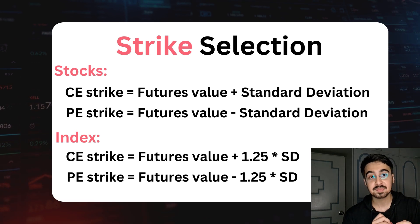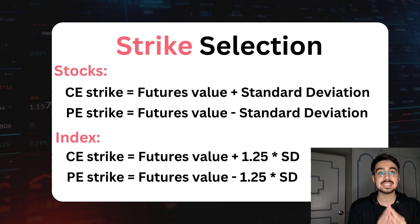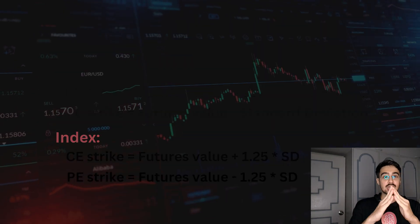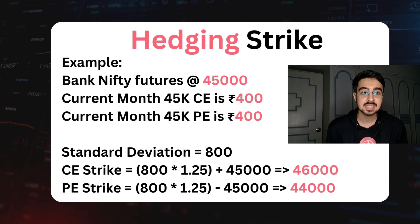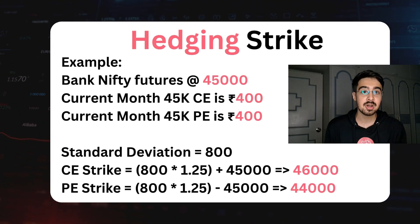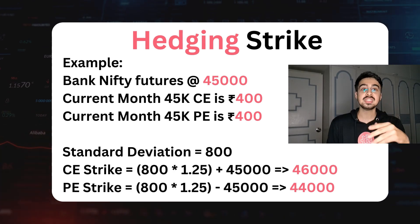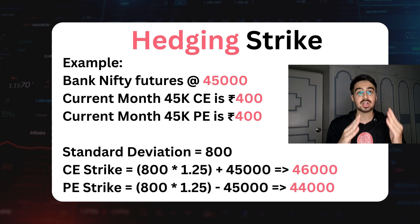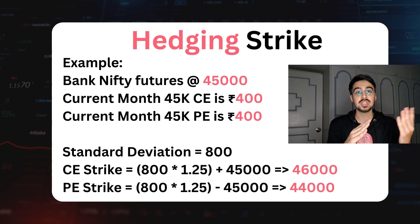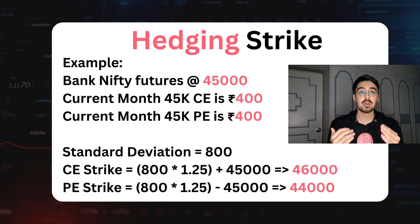For our hedging, we are not going one standard deviation away - we are going 1.25 standard deviations away. So if Bank Nifty is currently at 45,000 and the ATM call and put instrument are 400 and 400 rupees each, we get 800 as our total ATM instrument value. We then go 25% up from 800, which is 1,000. So we are buying the 45,000 plus 1,000 call and 45,000 minus 1,000 put instrument for our hedges. Our shorts happen in HDFC bank and ICICI bank call and put options, and we are buying the Bank Nifty call and put options which are 1.25 standard deviations away.